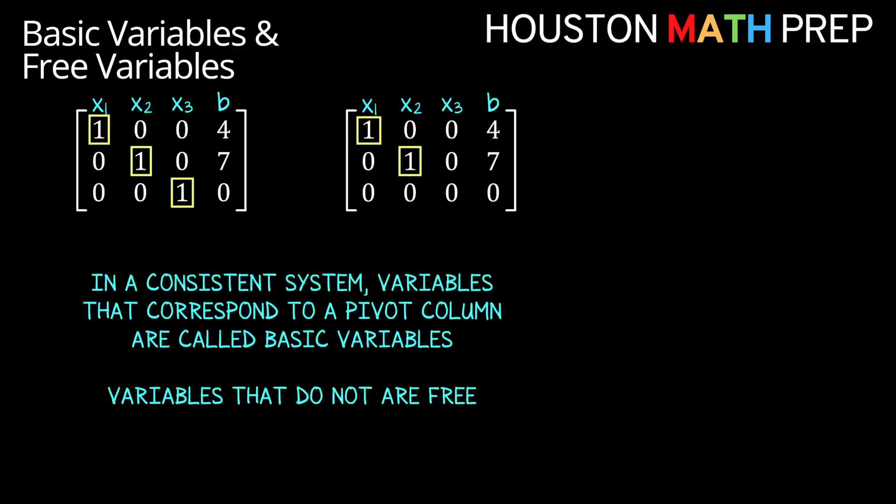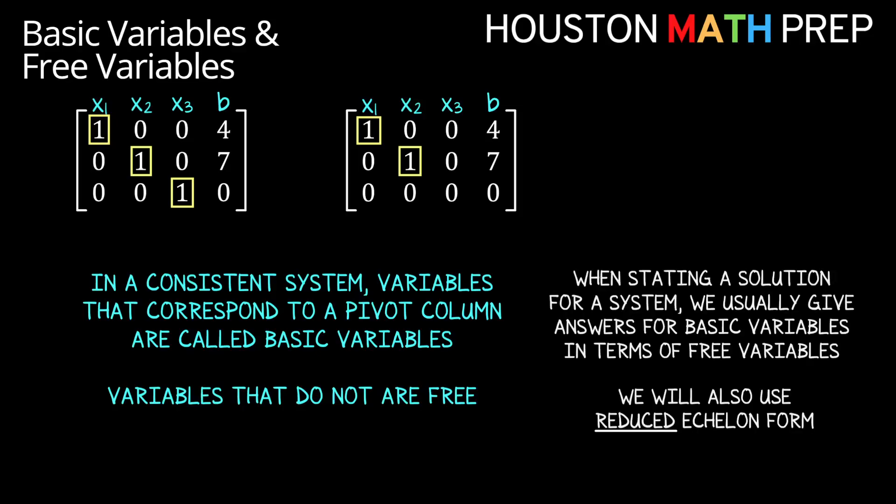The way we tell the difference: any variable that corresponds to a pivot column in our matrix is called a basic variable, and any variable that does not correspond to a pivot column is a free variable. When we write the solution for a system, we'll generally state answers for basic variables in terms of the free variables, and it will really be simpler to write all of this based on a matrix that's in reduced echelon form.